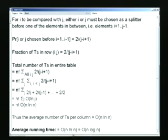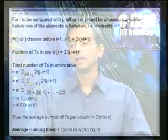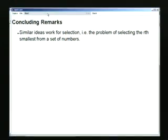So the total number of T's in the entire table is n factorial times the sum over j of O of ln j, which is n factorial times O of n ln n). Dividing by n factorial gives the average number of comparisons per column, which is O of n ln n). Since time is proportional to comparisons, the average running time is O of n ln n), and since ln n and log n are within a constant factor of each other, the average running time of quicksort is O of n log n. A similar idea works for selection — if we want to select the r-th smallest element, a similar analysis applies.